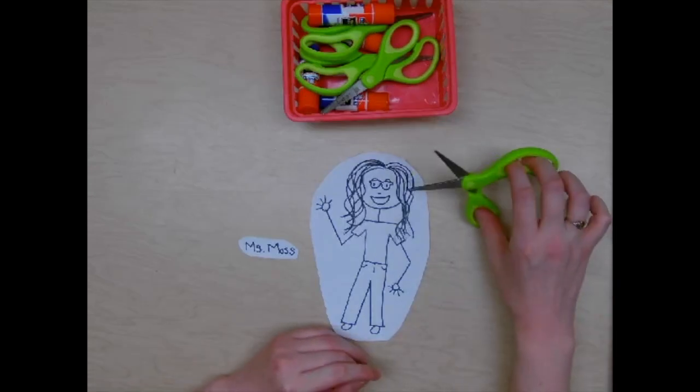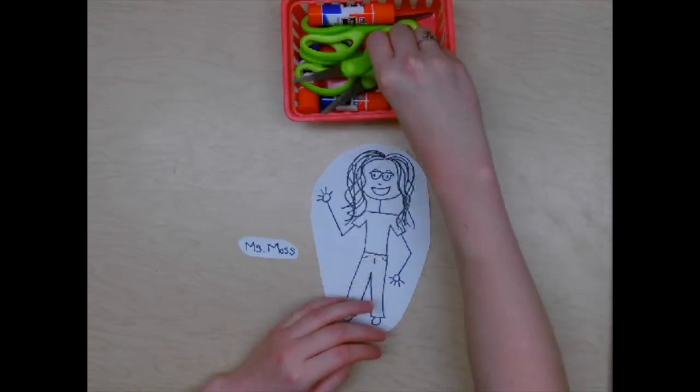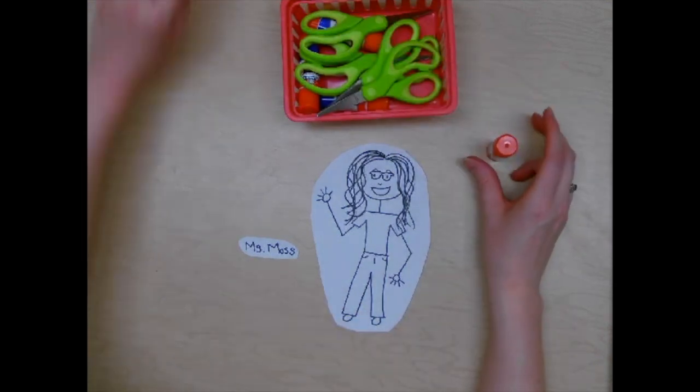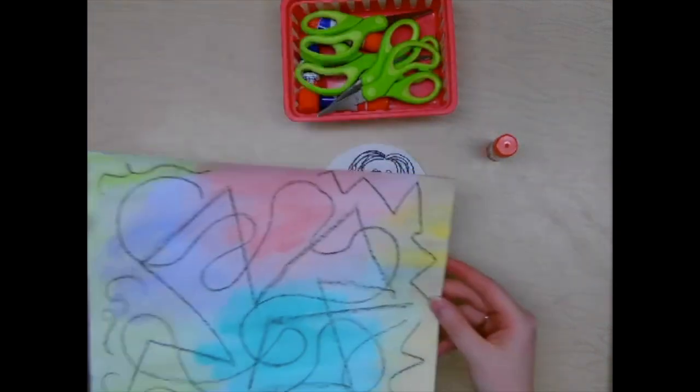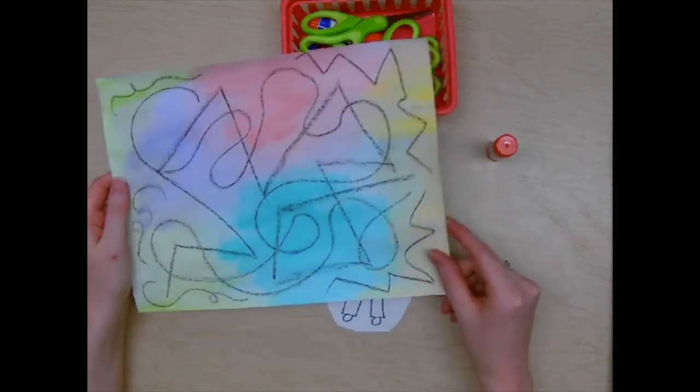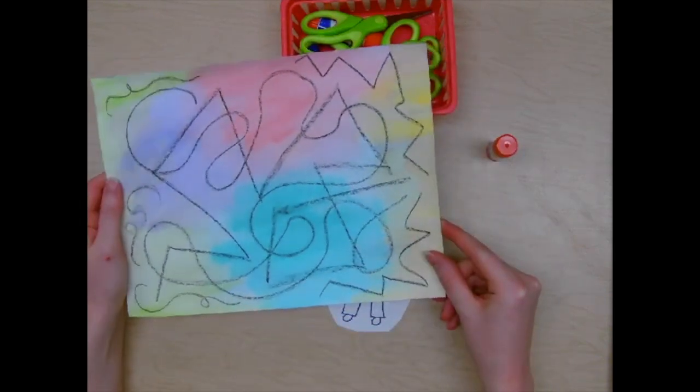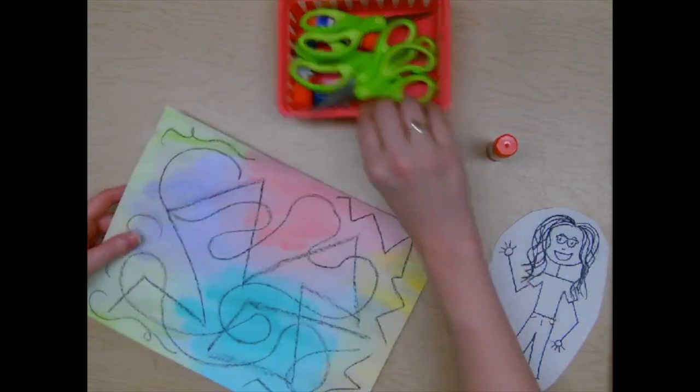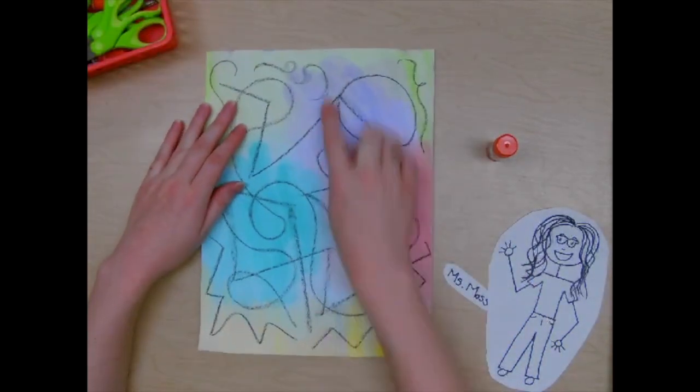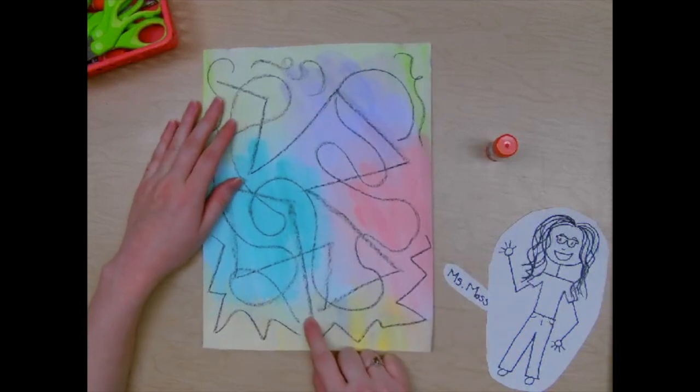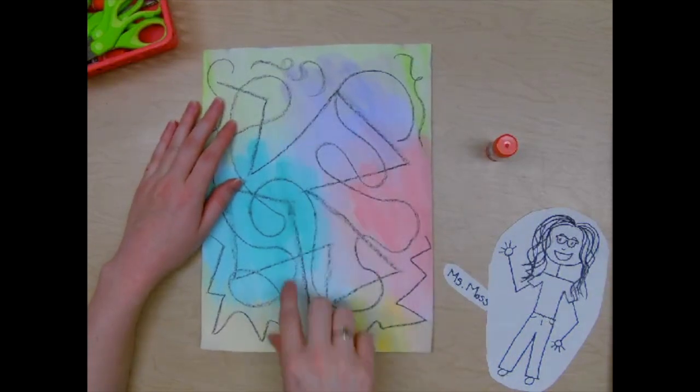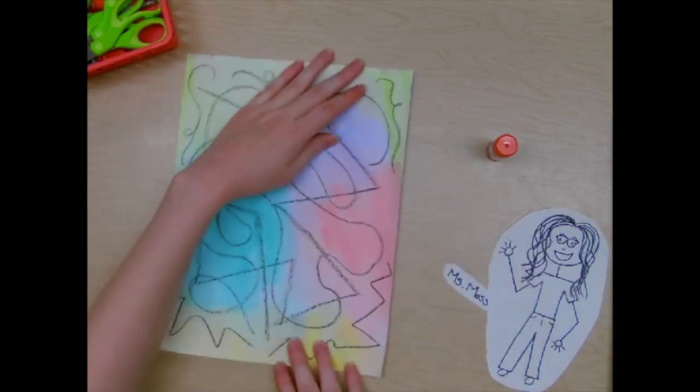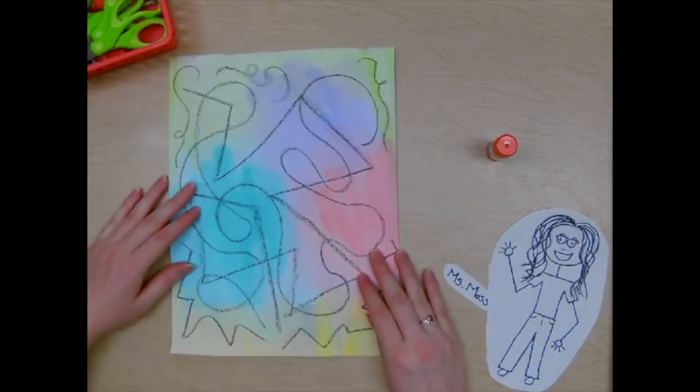Now that we've finished cutting out our people, we're going to put the scissors away and get out our glue sticks. I'm going to pass back out your crazy abstract artwork that we painted last time you were here. We're going to set them in front of us, tall. They're vertical. They're going up and down, not side to side like they're sleeping or laying down. We've got a paper standing tall in front of us.